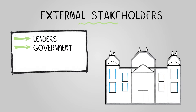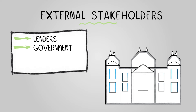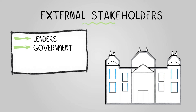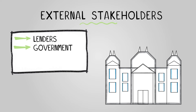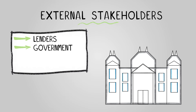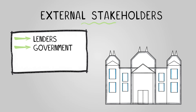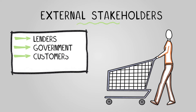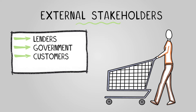The next external stakeholder is the government. The government needs financial statements to accurately assess taxes owed by the enterprise. These documents are critical for fulfilling tax obligations.